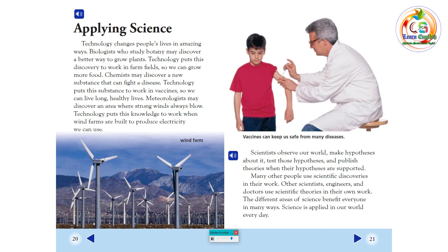Meteorologists may discover an area where strong winds always blow. Technology puts this knowledge to work when wind farms are built to produce electricity we can use. Scientists observe our world, make hypotheses about it, test those hypotheses, and publish theories when their hypotheses are supported. Many other people use scientific discoveries in their work. Other scientists, engineers, and doctors use scientific theories in their own work. The different areas of science benefit everyone in many ways. Science is applied in our world every day.